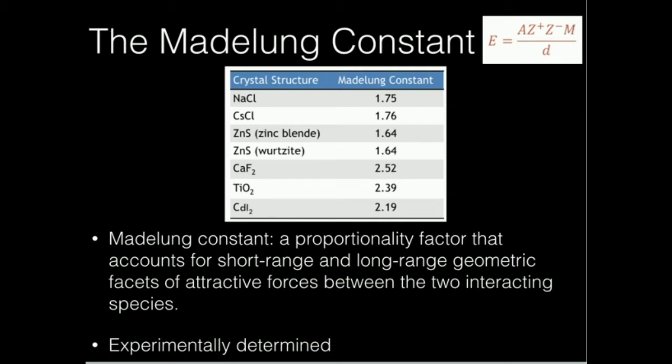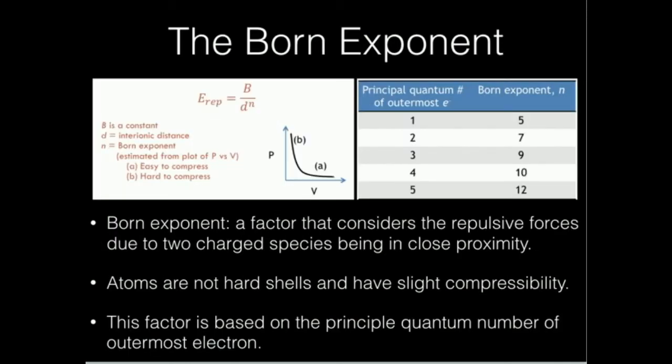Unfortunately, the Madelung constant does not take into account repulsive forces and other deviations due to that. So for that, we have to do something a little more complicated, and that's by using the Born exponent. This term here is the repulsion — at least the lattice energy contribution due to repulsion. It's equal to b, which is just a constant, divided by d to the n, where d is the interionic distance and n is the Born exponent.